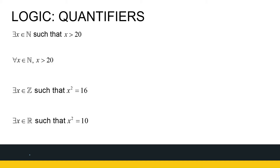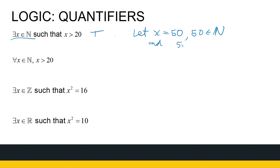Here are some statements, using different words to show how we can present them. If I say there exists a natural number x such that x is greater than 20, that is a statement and we want to check whether it's true or false. I'm saying I can find a natural number that's bigger than 20. That's definitely true. Let x be equal to 50. 50 is a natural number, and 50 is greater than 20. So that is why I can say my conclusion is true.